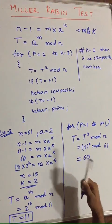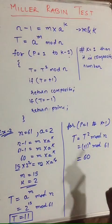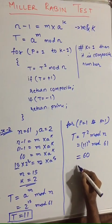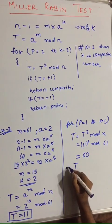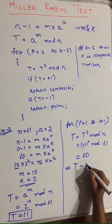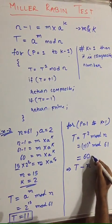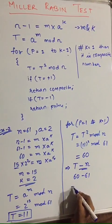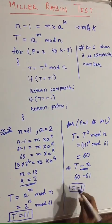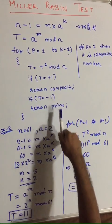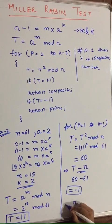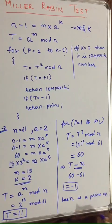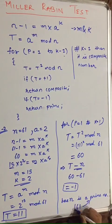In the Miller-Rabin test we need our answer in the form of either positive 1 or negative 1. Since we got 60, which is not directly 1 or minus 1, we use the equation t minus n: 60 minus 61 equals minus 1. According to our algorithm, if t equals minus 1 it returns prime. So here n is a prime number — 61 is a prime number.